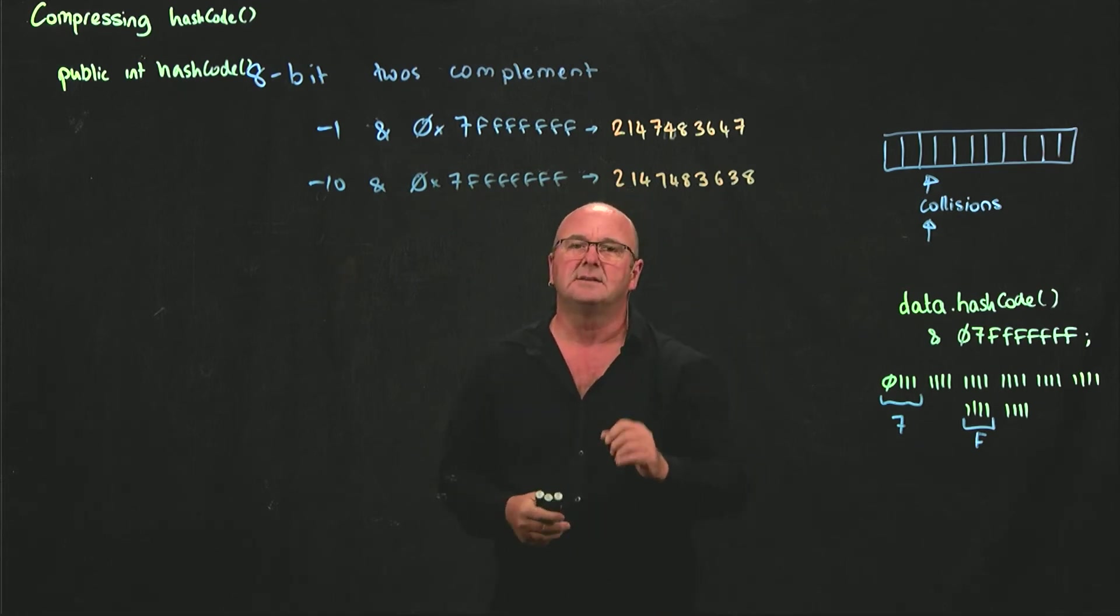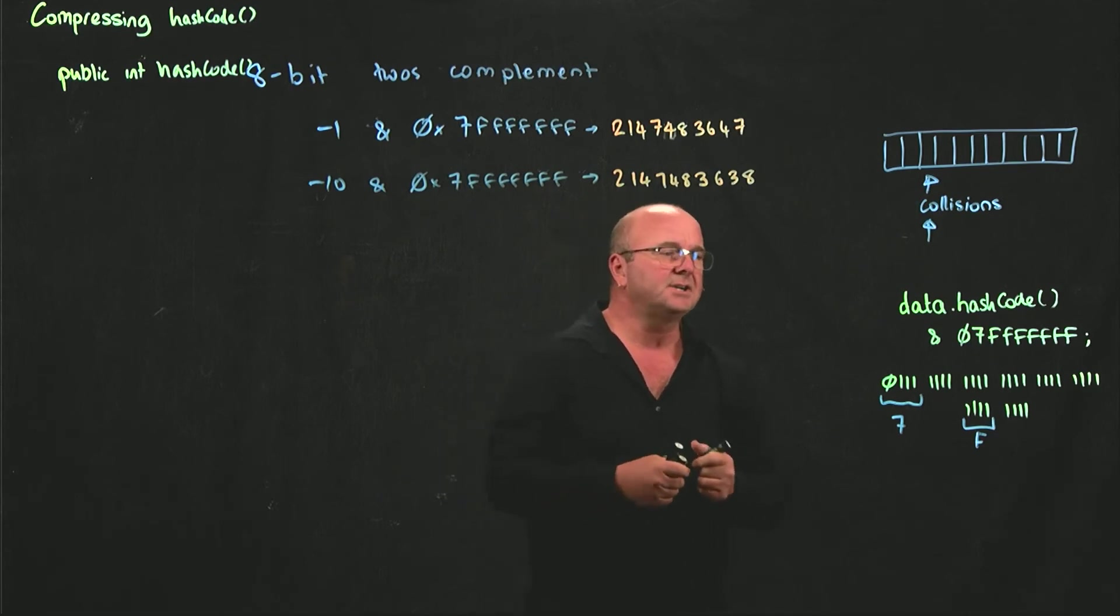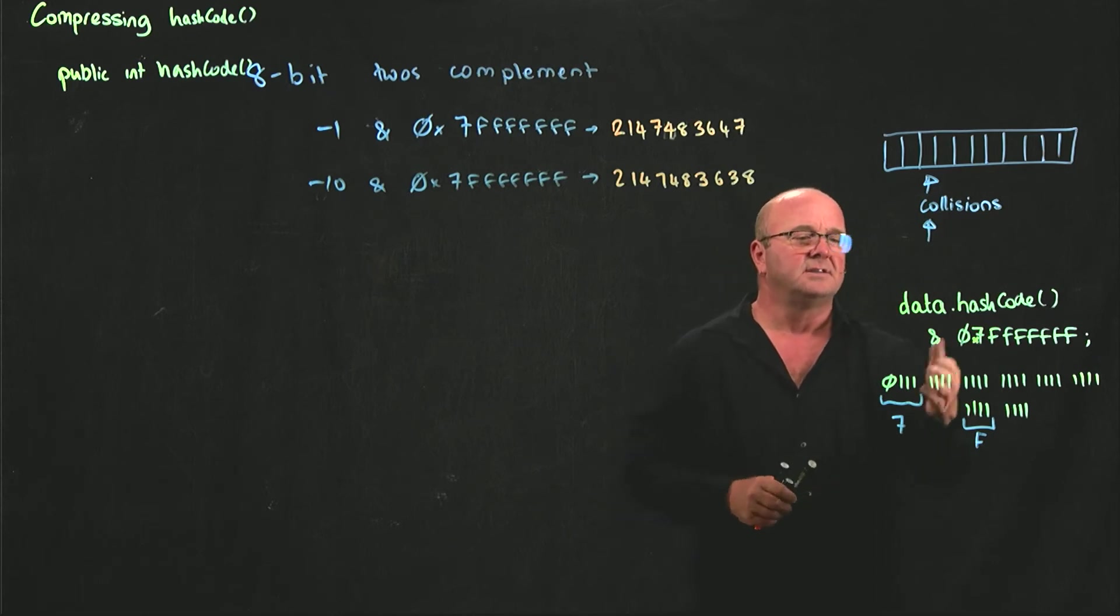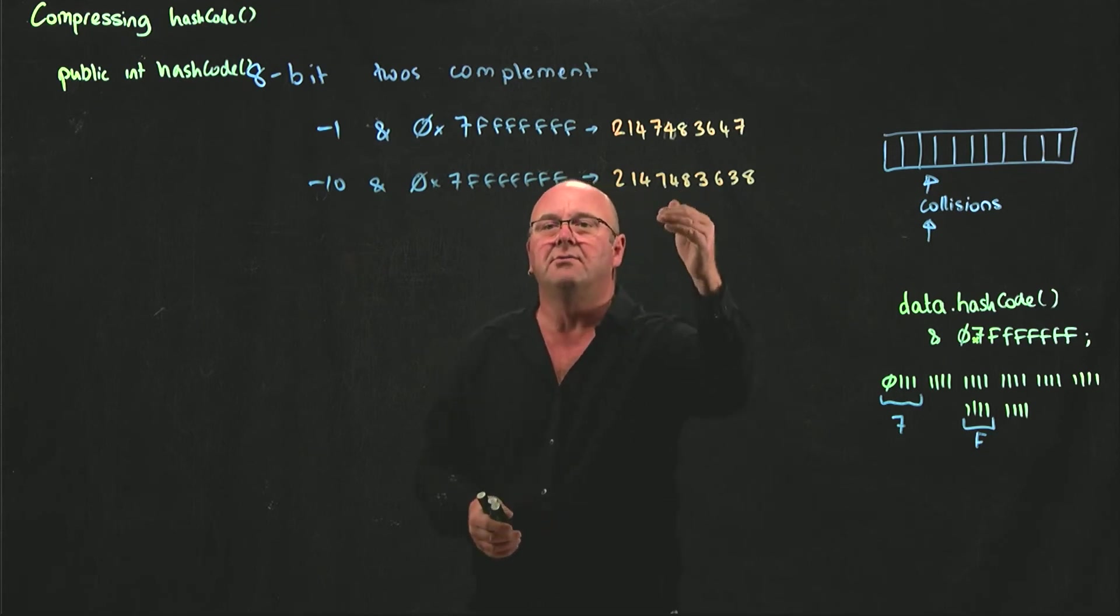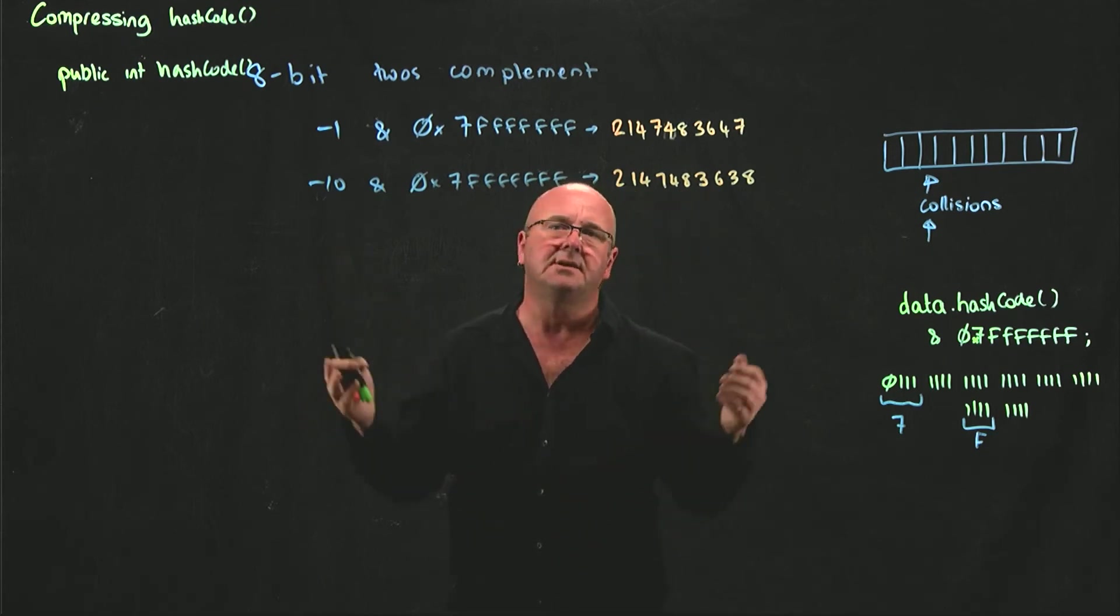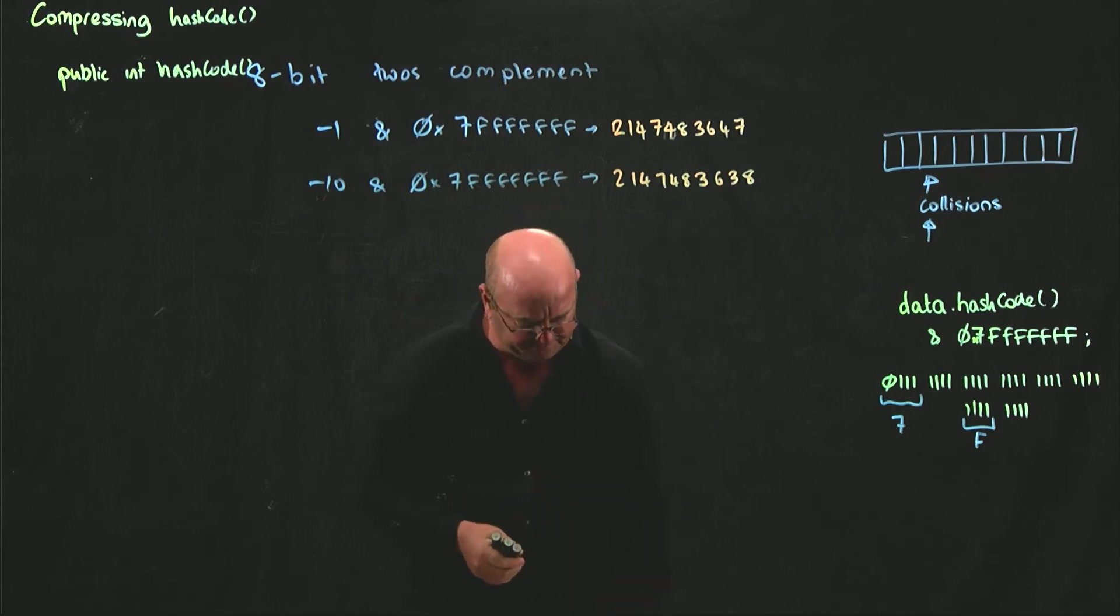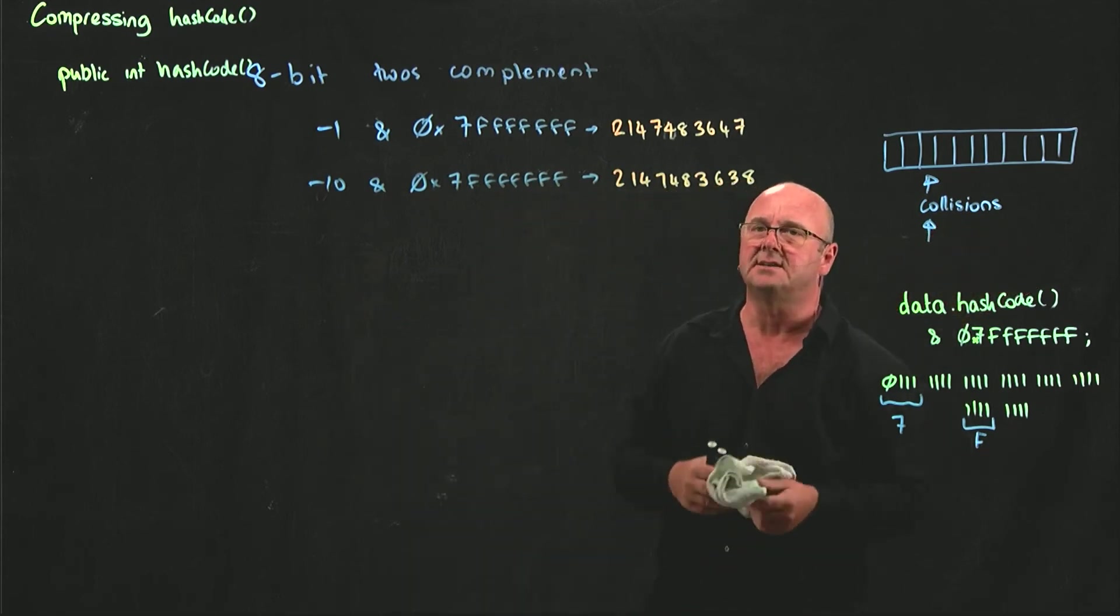It doesn't matter what the number is. It matters that it's not negative. And so that's why we take our hash code entry and we AND it with 0x7FFFFFFF. Now we've got a positive number, a large positive number if we start with a negative number. And if our hash code is giving us a positive number back, this doesn't change the number at all.